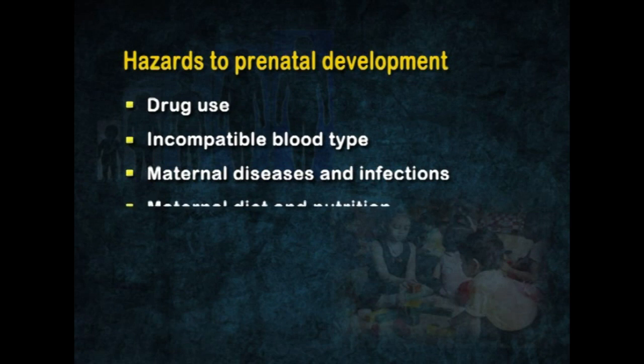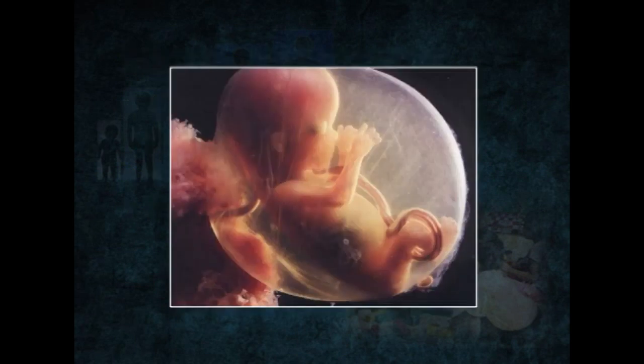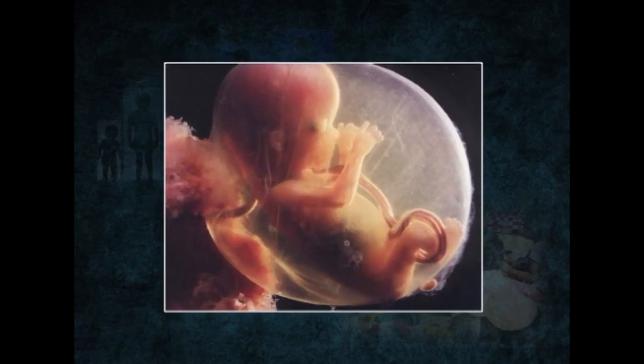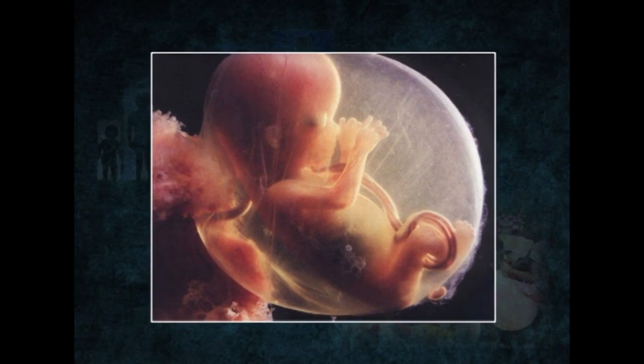The next important hazard is maternal diet and nutrition. A developing embryo or fetus depends completely on its mother for nutrition, which comes from the mother's blood. The nutritional status of the embryo or fetus is determined by the mother's total calorie intake, including her intake of proteins, vitamins, and minerals. Children born to malnourished mothers are more likely than other children to be malformed.